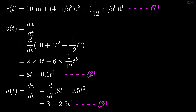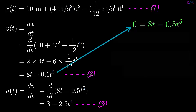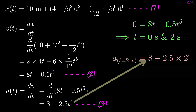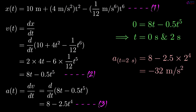From the velocity equation, when velocity is 0: 0 = 8t − 0.5t⁵, which gives t = 0 and t = 2 seconds. That means the car has 0 velocity at t = 0 s and t = 2 s. The acceleration at the second instant when the car has 0 velocity is a = 8 − 2.5 × (2)⁴ = −32 m/s².